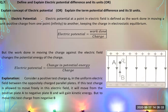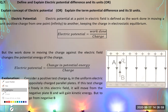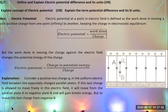Electric potential at a point in an electric field is defined as the work done in moving a unit positive charge from infinity to that point, keeping the charge in electrostatic equilibrium. Electrostatic equilibrium means there must be no acceleration on the moving charge.